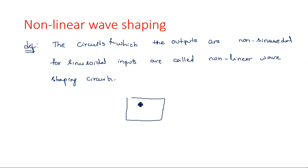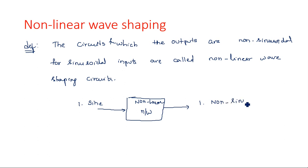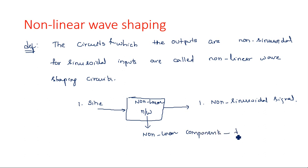The meaning of nonlinear wave shaping is: suppose you have a nonlinear network, and the input is a sine wave — then the output is a non-sinusoidal signal. When you give any other signal other than a sine wave, the shape of that particular signal will not be varied. A nonlinear network is made up of nonlinear components like diodes and transistors — that is the reason why it is named a nonlinear network.